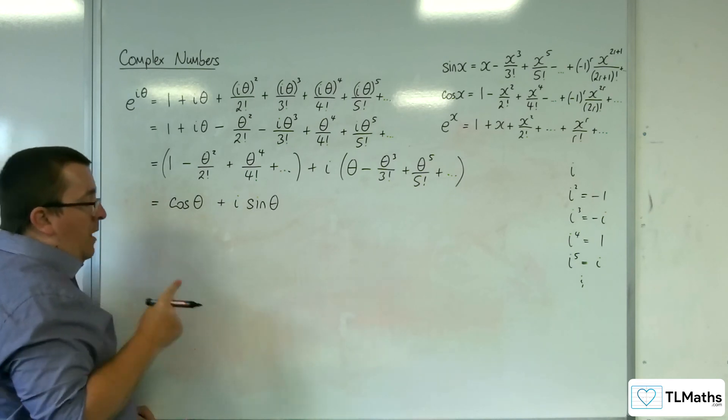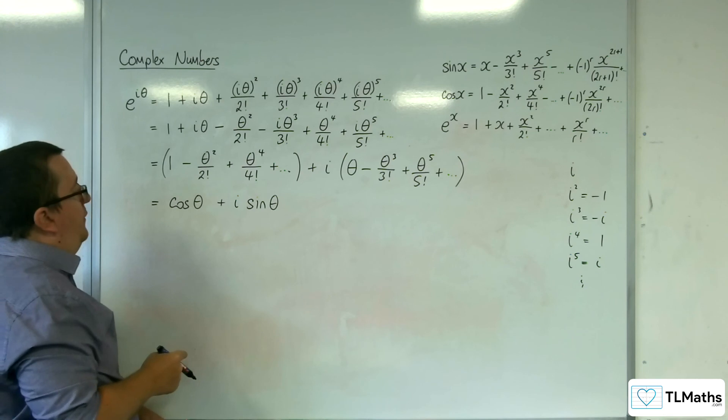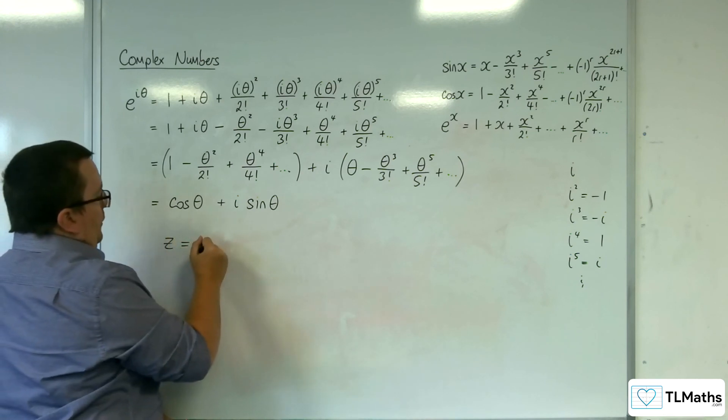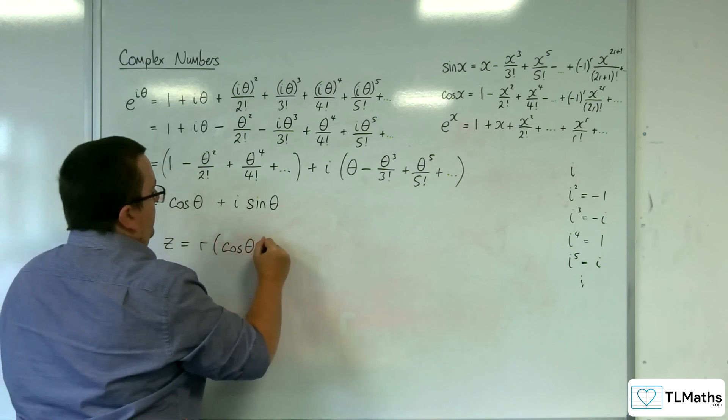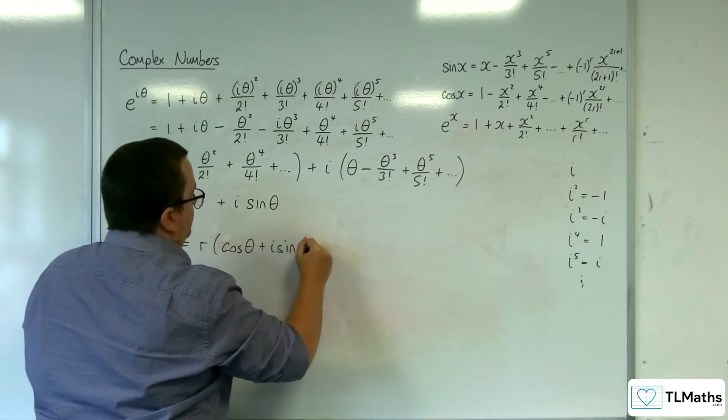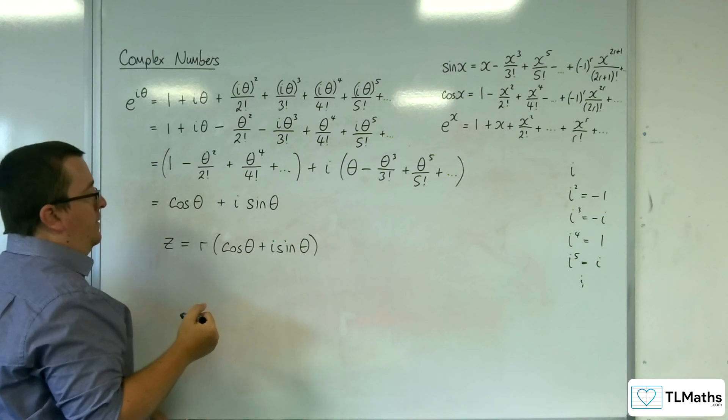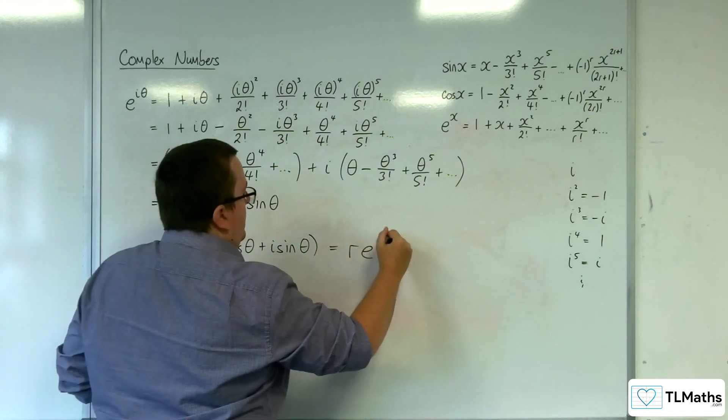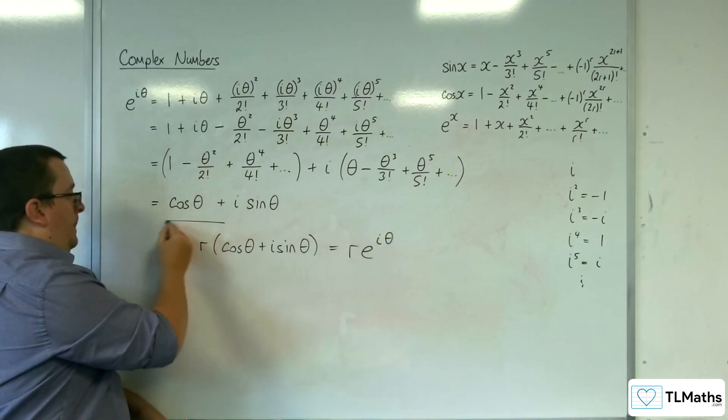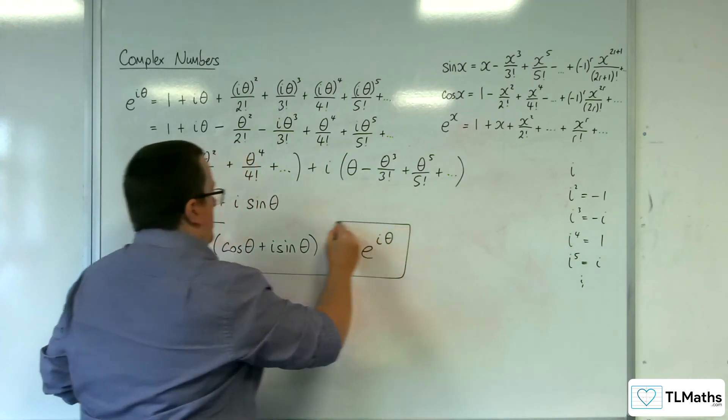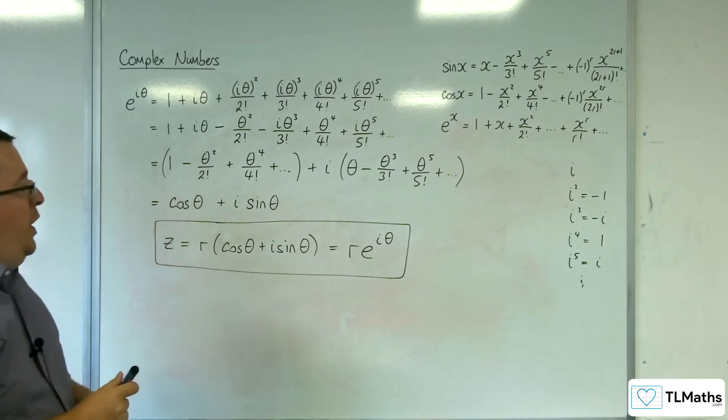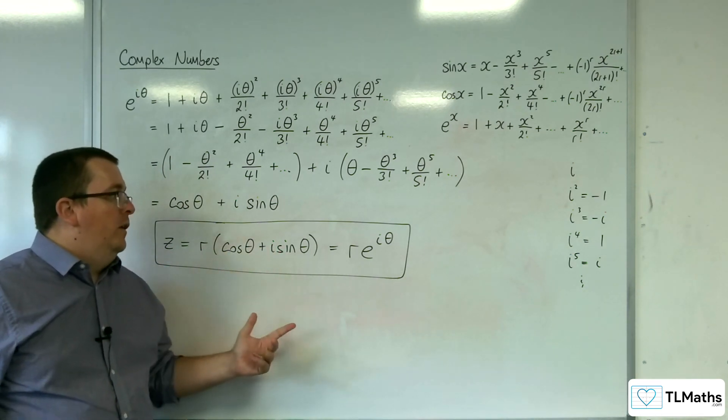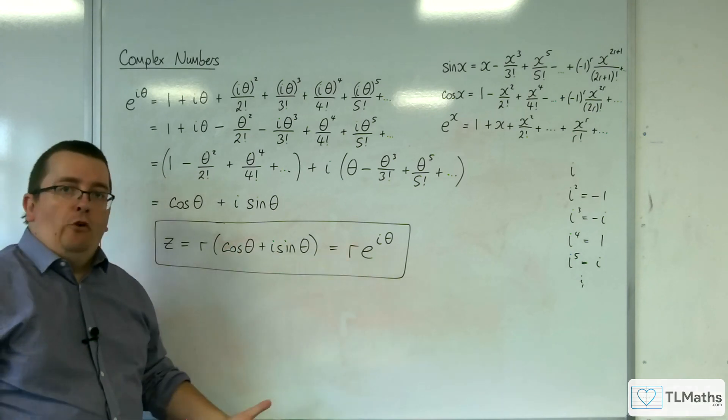Now, with that in mind, the consequence is that if you've got a complex number z equals r cosine theta plus i sine theta, then it can also be written in the form r e to the i theta. So you've got this alternative way of writing the complex number down in its modulus argument form.